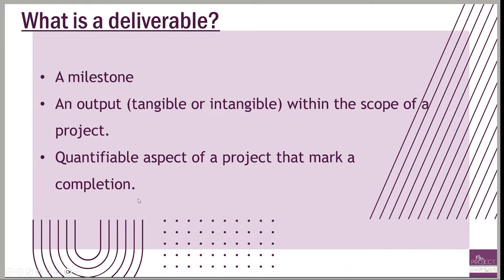So what is a deliverable? A deliverable is a milestone. How we manage those milestones — we say it's an output, whether tangible or intangible, that's within the scope of the project. It's also a quantifiable aspect of a project that marks a completion. That's what you've got to remember as to what a deliverable is. Usually they're those zero-day tasks, and they mark the completion of something.